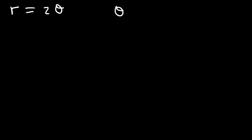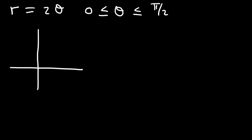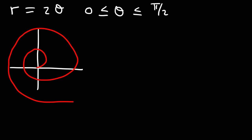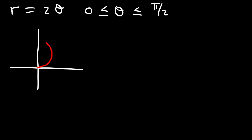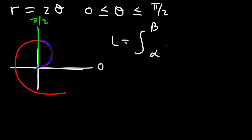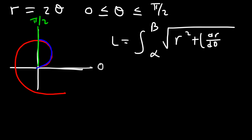Let's work on another problem. Let's say r = 2θ, and we want the arc length from 0 to pi over 2. Go ahead and graph the function and determine the arc length in this region. This graph is a spiral, and we only want the portion from 0 to pi over 2 — the arc highlighted in blue, bounded by theta = 0 and theta = pi over 2.